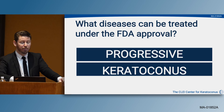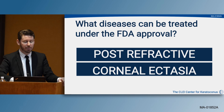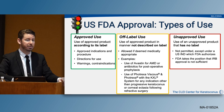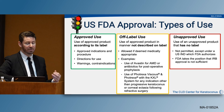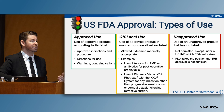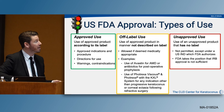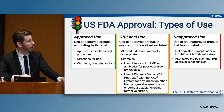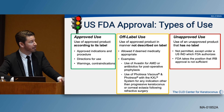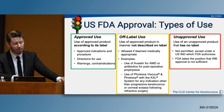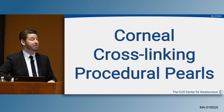What diseases can be treated under FDA approval? Progressive keratoconus and post-refractive corneal ectasias. In the United States, the FDA approves devices and drugs, not the procedure itself. Off-label use would include conditions like pellucid marginal degeneration or ectasia after RK. Unapproved uses — for instruments and drugs with no label — have not been evaluated for safety and efficacy and use an IND designation within the United States.